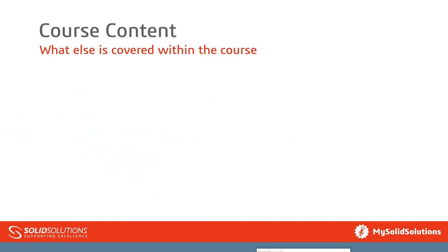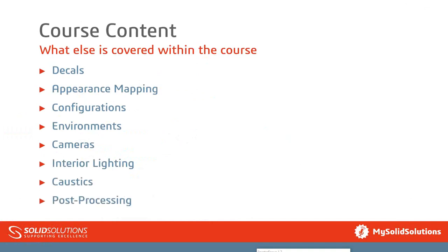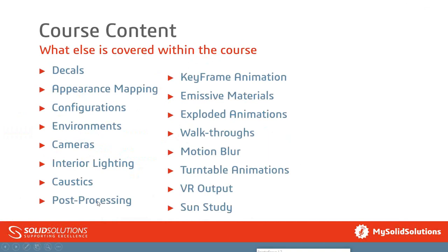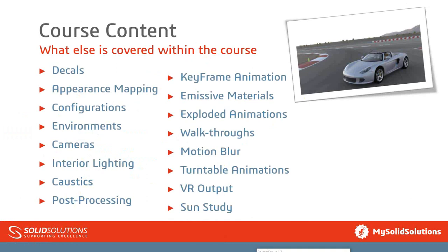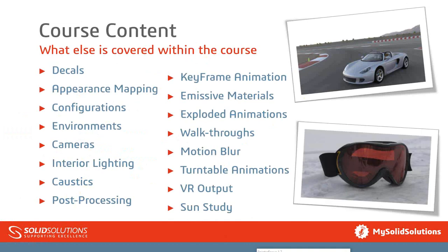That really is lesson one. The full course covers decals, appearance mapping, configurations (really display states in Visualize), environments, cameras, material lighting, and caustics and post-processing options — which are really in the Professional area. On the Professional course you also get keyframe animation, emissive materials, explode animations, walkthroughs, motion blur, turntable animations, VR output, and sun studies. Here are a few images produced when we ran this internally last week for the first time — a nice Porsche at the top and some squiggles at the bottom. We're quite excited about Visualize and this course — it's a really nice tool with some great renders and animations.